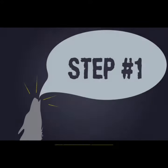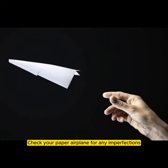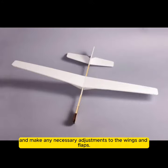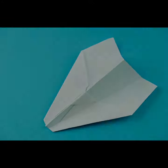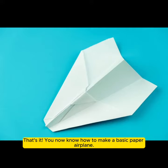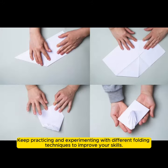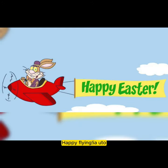Step 7: Final adjustments. Check your paper airplane for any imperfections and make any necessary adjustments to the wings and flaps. That's it. You now know how to make a basic paper airplane. Keep practicing and experimenting with different folding techniques to improve your skills. Happy flying!